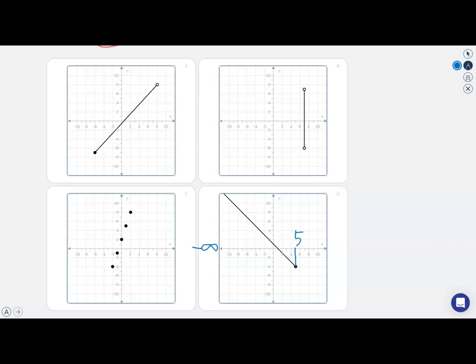So option D matches the domain that we were given. x is less than or equal to 5.